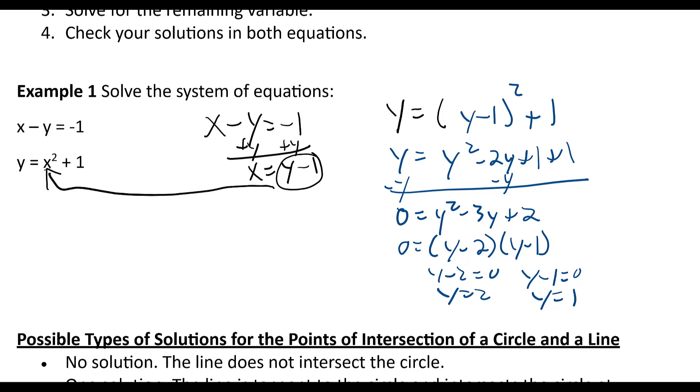If we put that back into this equation here, we'd have x equals two minus one, which is one. So two comma one is a point. And put the other point in there, x equals one minus one, which is zero.